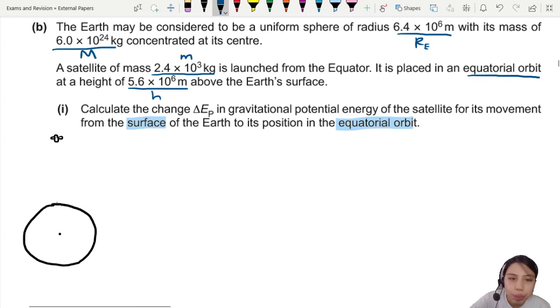Interesting. What equation shall we use ah? There is one gravitational potential energy equation which is GPE or sometimes you use the alphabet U or E_P. This will be negative G M M over R. They don't care too much about the negative. You want to include negative? Sure. You don't want to include? It's fine.